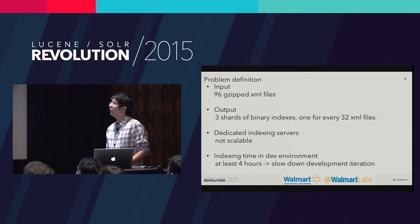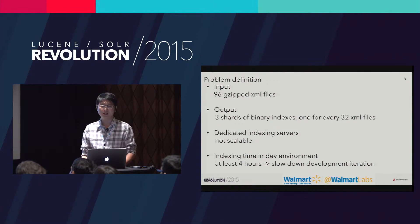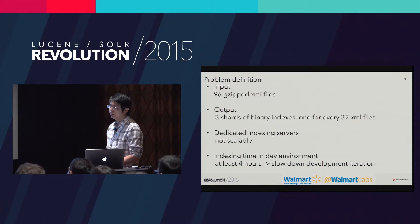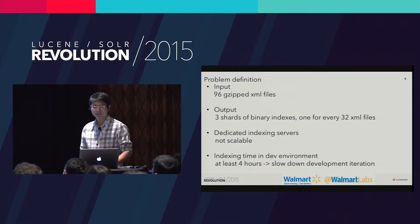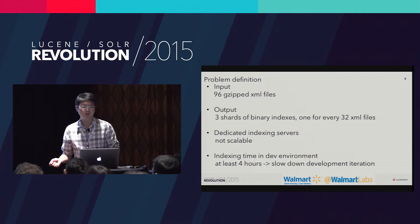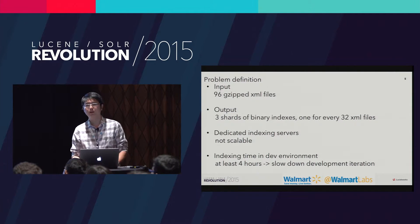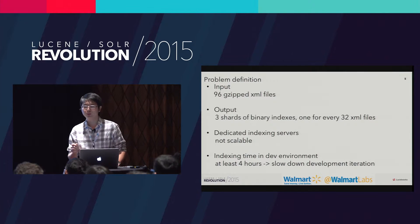Here is the problem definition. We actually have a couple of GZIP XML files — documents — and we'd like to convert them into binary index. We used to have a dedicated server, and at that time we didn't use SolrCloud. We have an in-house customized Solr. For developers, we don't have the luxury of dedicated servers; we have to run indexing in the dev node, and it used to take at least four hours. That slowed down our development. So we are trying to find an efficient and scalable way to do this indexing in a distributed fashion.